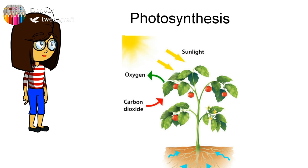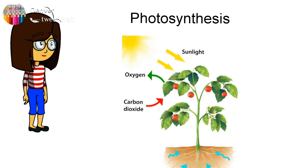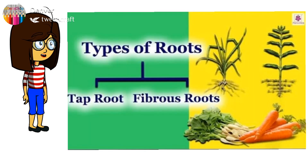Photosynthesis is the process by which the plant prepares its own food. For preparing food, the plant requires sunlight, water, and minerals from its surroundings. With the help of leaves and stems it absorbs sunlight and carbon dioxide from the air, and with the help of roots the plant absorbs water and minerals. Plants take up carbon dioxide and give out oxygen, which humans and animals breathe in.